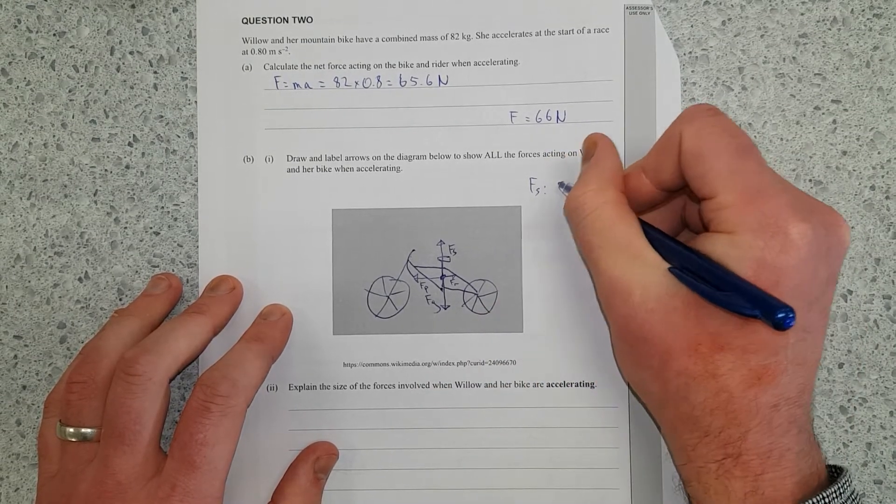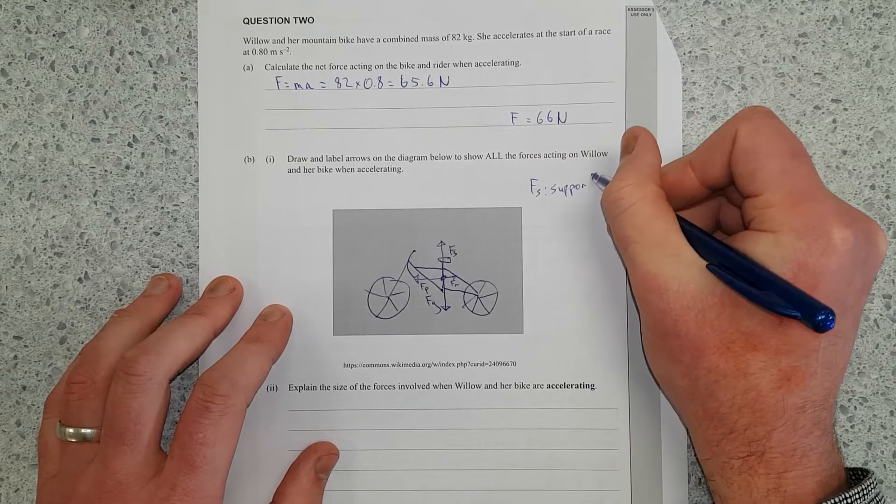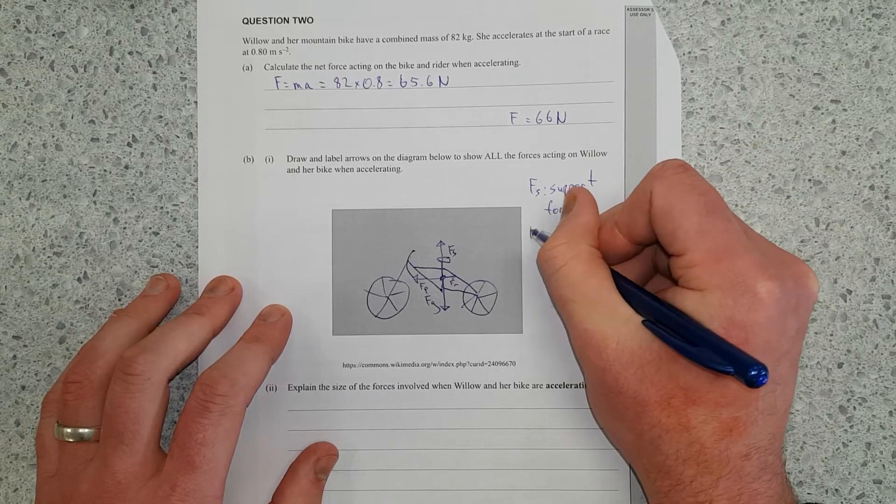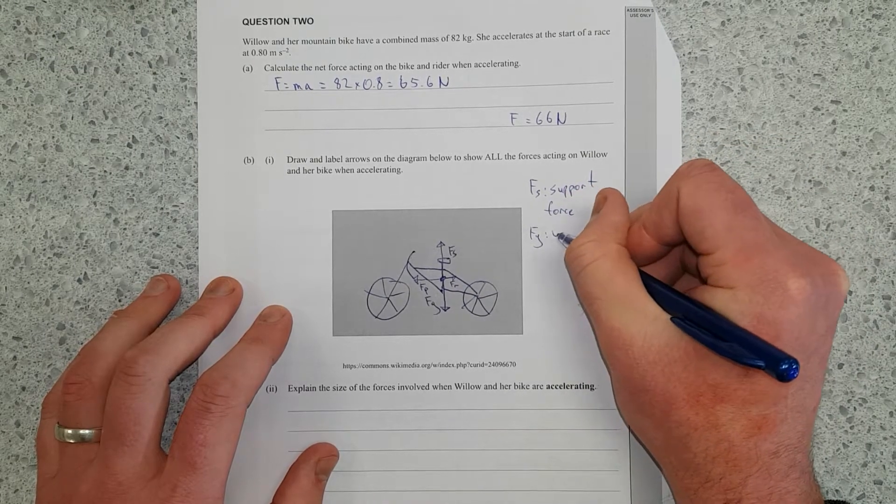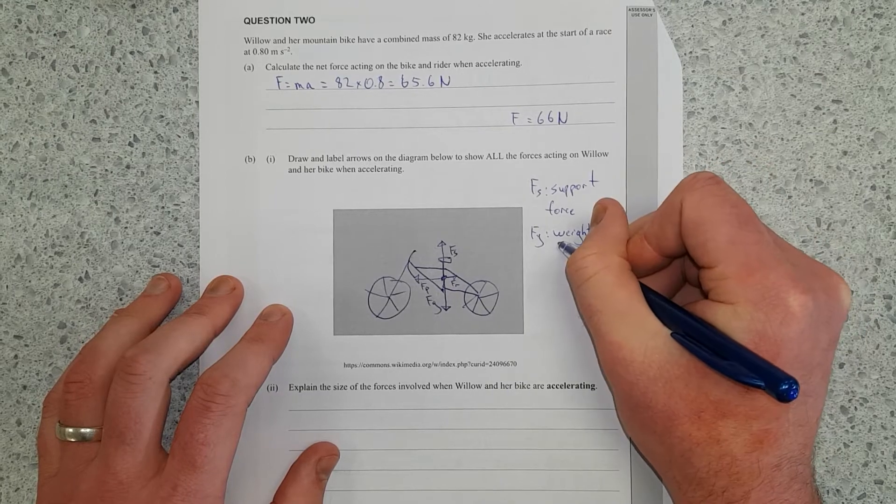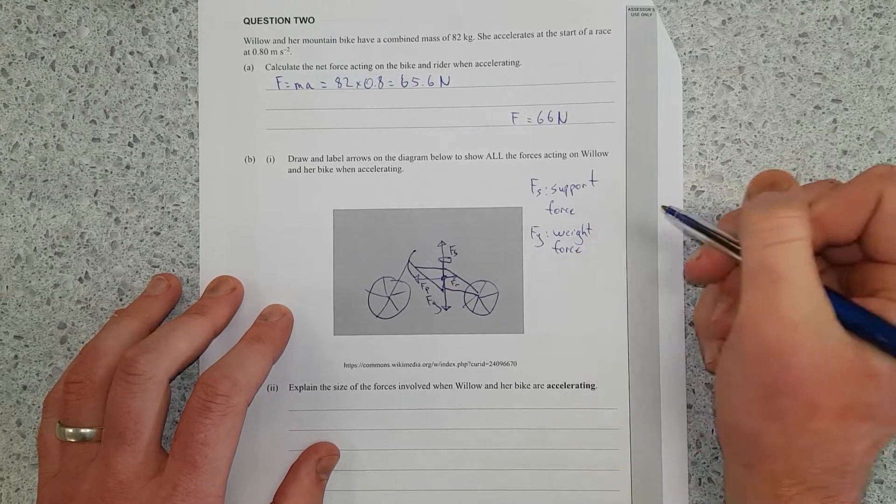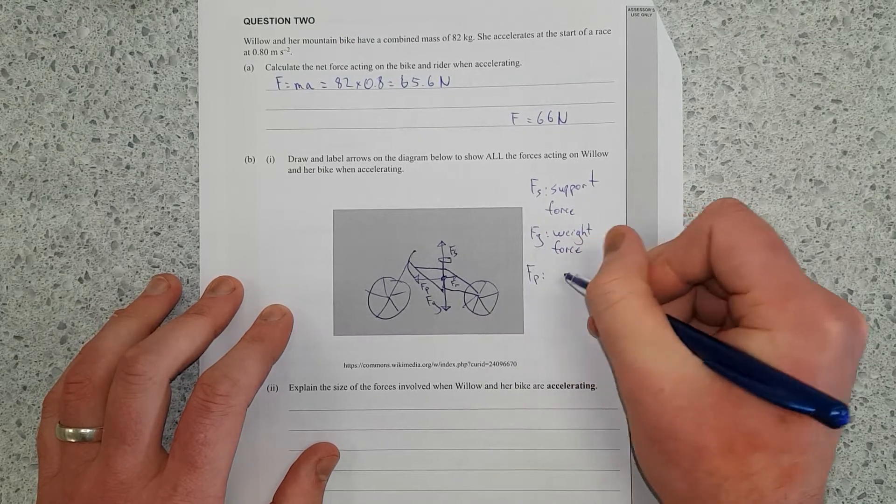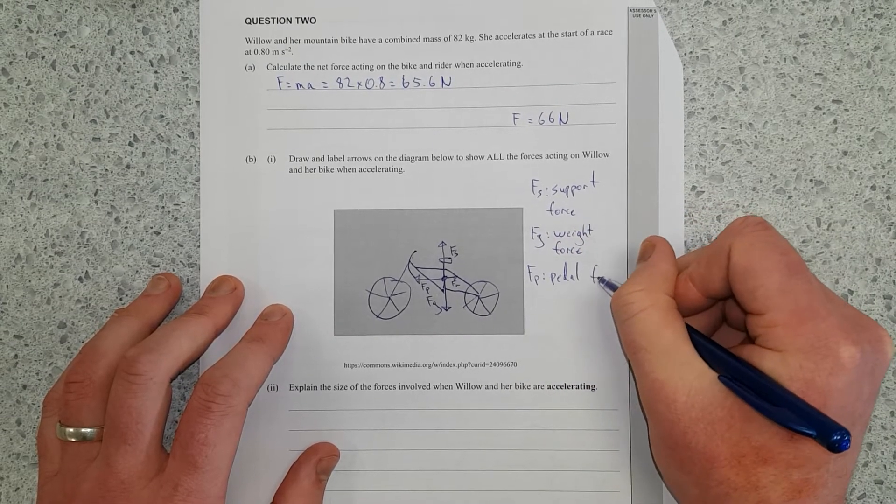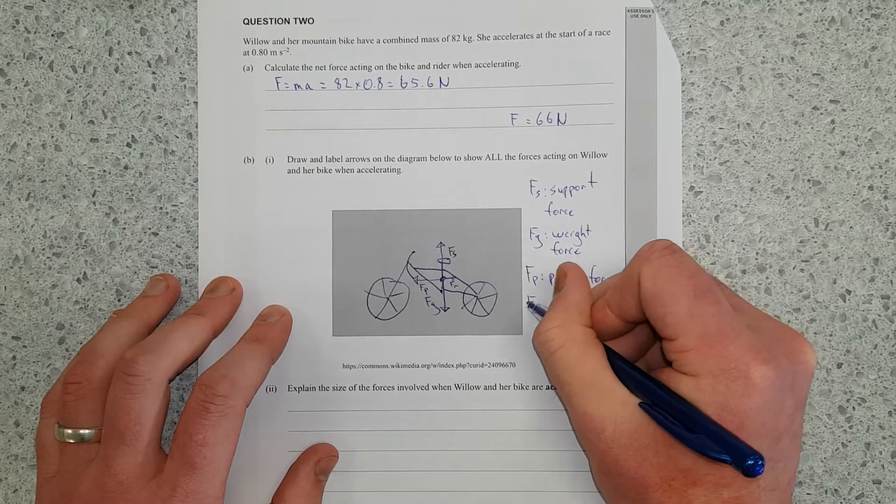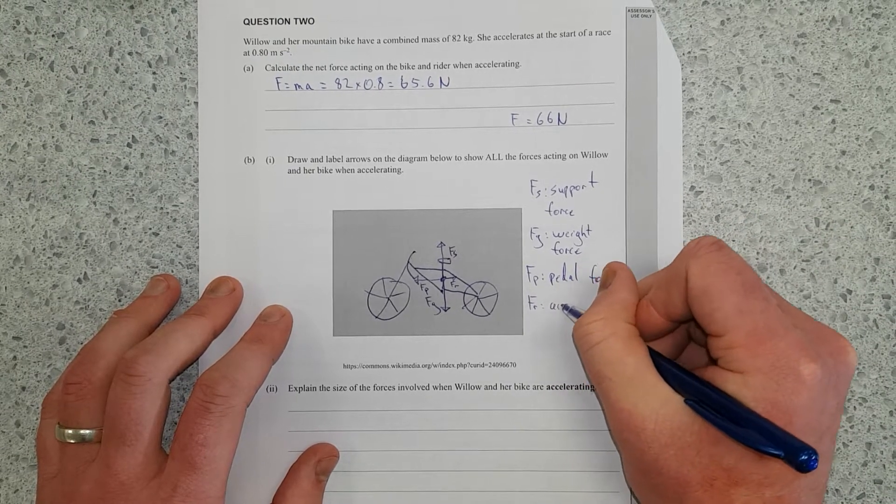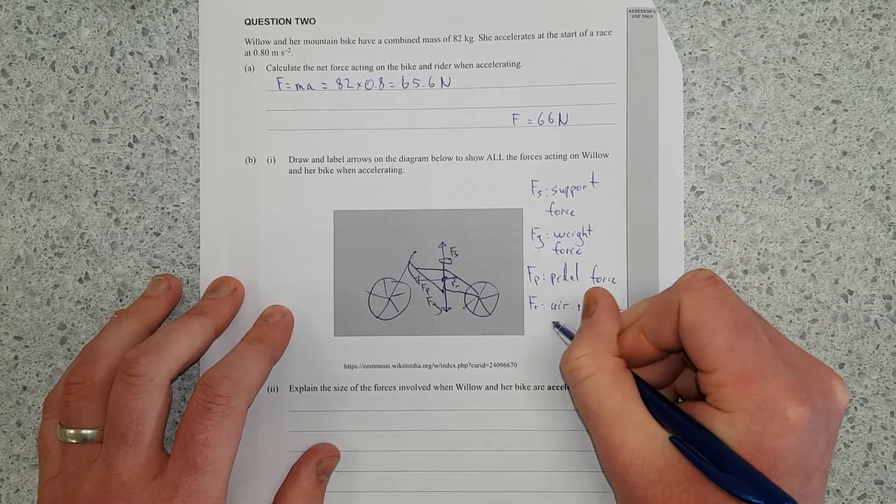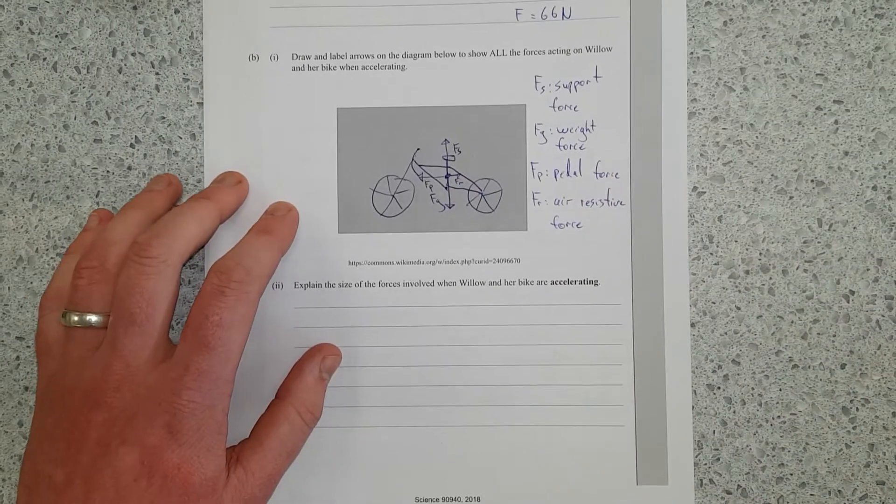Where FS, support force. Because if you just draw those letters and don't have a key, the examiners have no idea what you're doing. Support force. FG, weight. You can put FW if you want, I don't really care. FP, pedal force. And FR, air resistance, air resistive. I don't think that's where I heard of force. I assume that's NCEA air resistive.